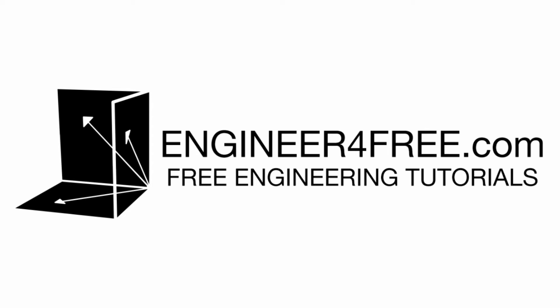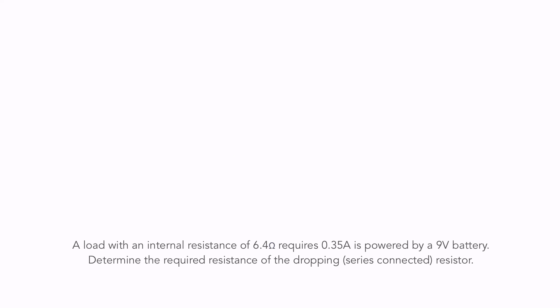All right guys, welcome back. So in this video we're working through this example problem about dropping resistors. This is such a common question that you might see. It's basically saying that we have a load that has an internal resistance of 6.4 ohms. It's going to be powered by a 9 volt battery and this load requires 0.35 amps to operate. There's going to be a resistor that accompanies it in series in the circuit that will help us to achieve that specific current.